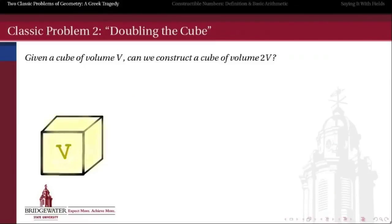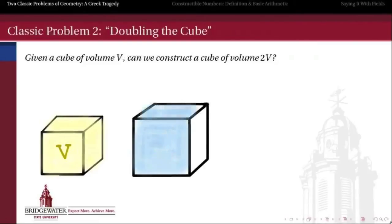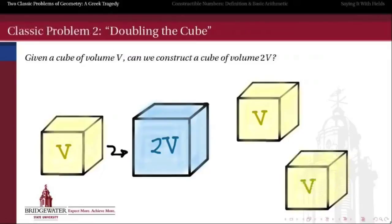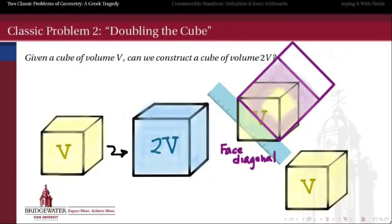All right, so it works for a square. But what about a cube? Can we do it in three dimensions? If I have a cube of starting volume V, can I use a compass and a straightedge to construct a new cube whose volume is twice the original? Well, we could try a couple of approaches like we did with the square. For example, we could try the face diagonal of the cube.